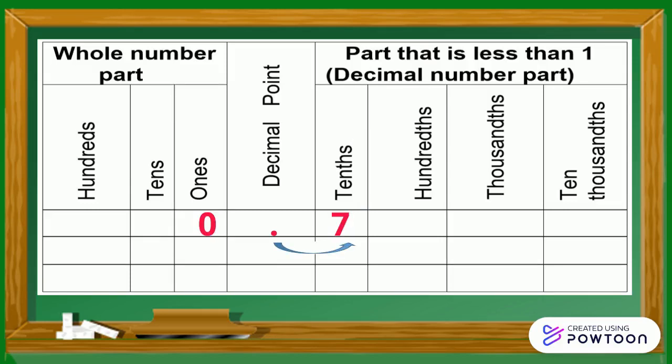The digit after the decimal point to the right has a place value of tenths. It is read as 7 tenths.